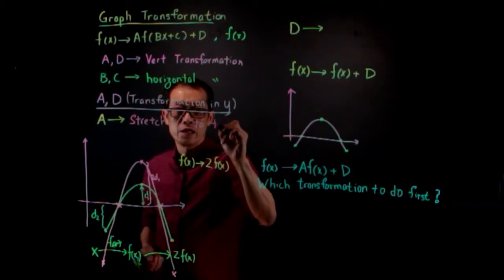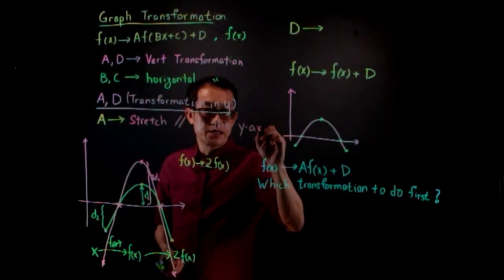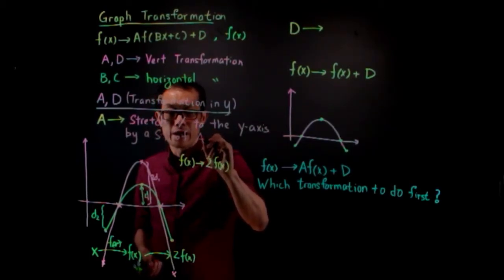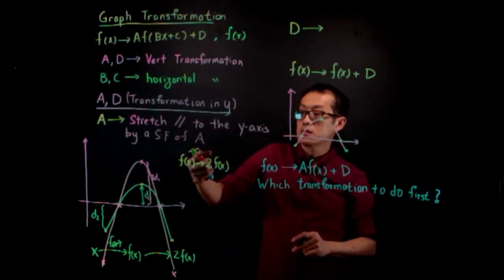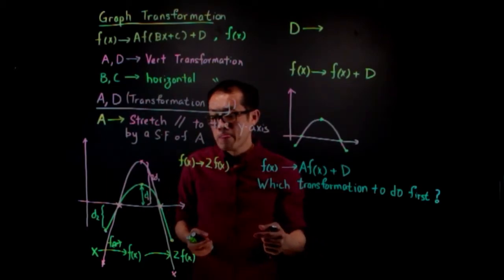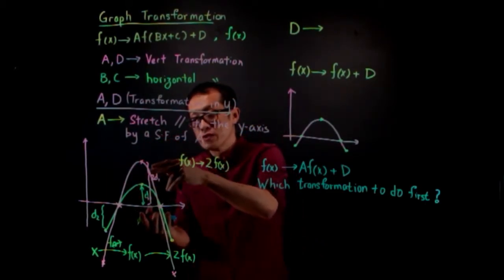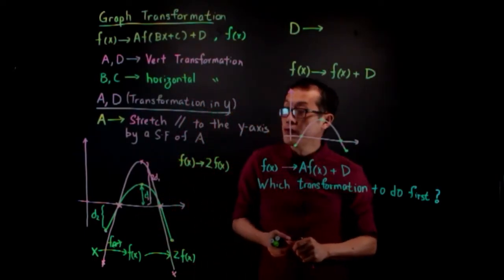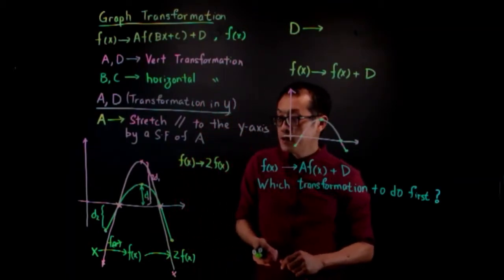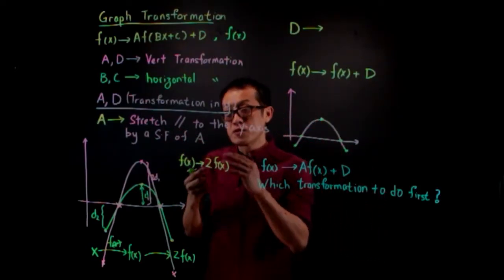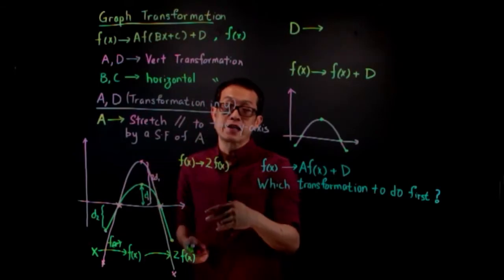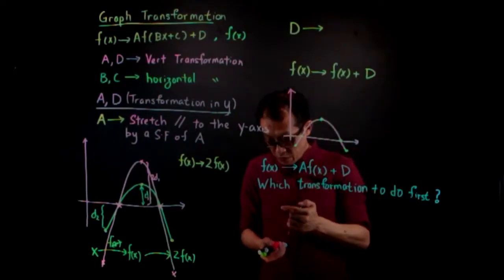So 'a' produces a stretch parallel to the y-axis by a scale factor of a. If a is greater than one it's a stretch; if a is smaller than one the graph is compressed. For minus a — let's say it's minus one half — it is first compressed and then multiplied by minus one, so the graph is reflected about the x-axis.